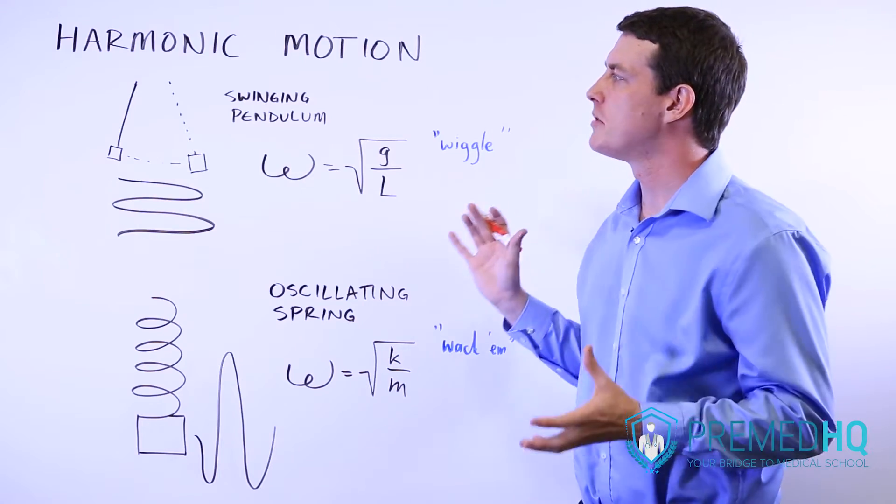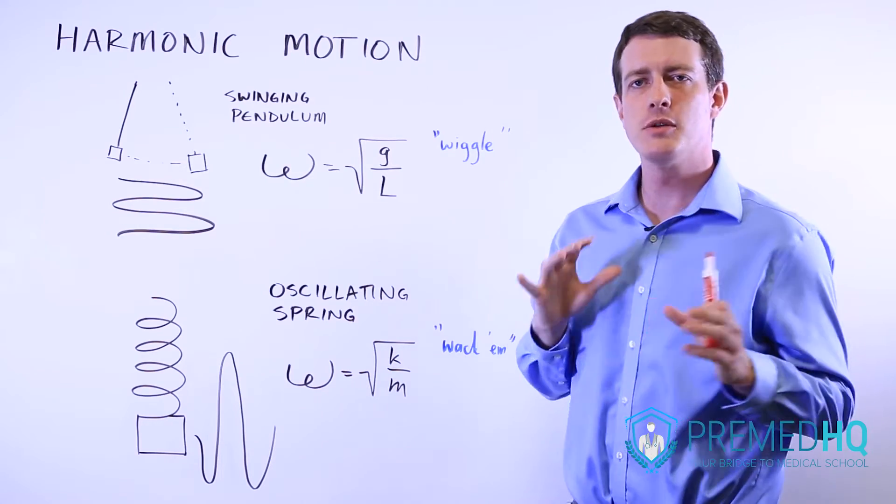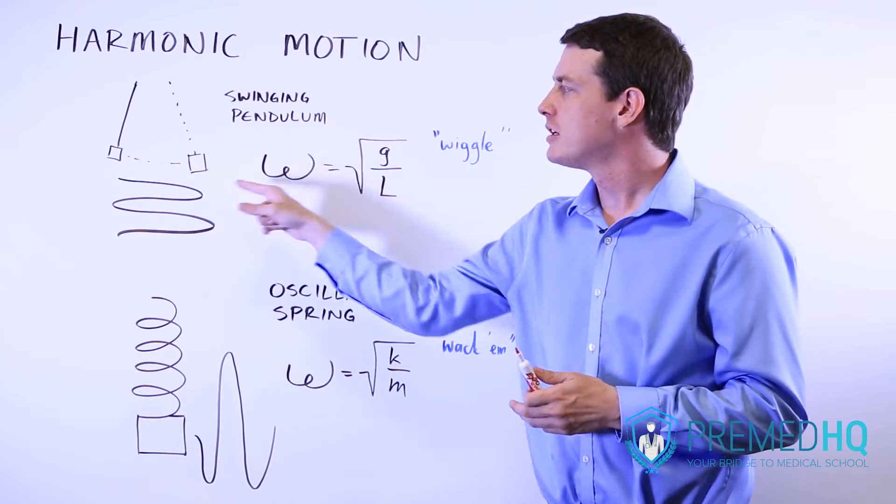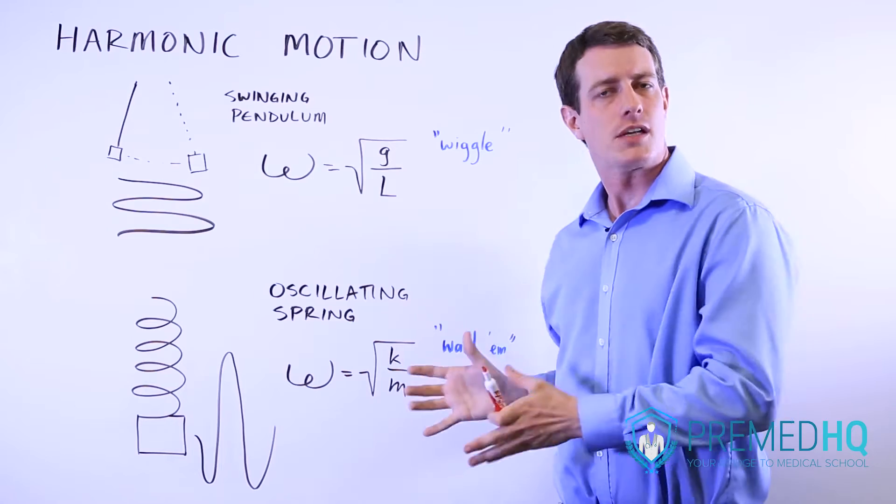Harmonic motion or simple harmonic motion is something that you observe whenever you have an object moving in such a way that the position of that object over time resembles a waveform.